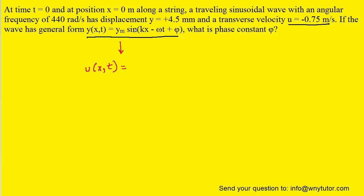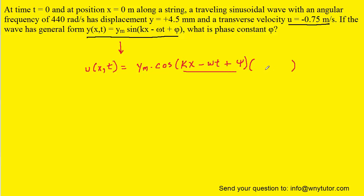The derivative of the sine function is the cosine function. But according to the chain rule, we must also multiply by the derivative of the inside of our cosine function. We're taking the derivative with respect to time, so the derivative of kx will be zero and the derivative of phi will also be zero. But the derivative of negative omega t will turn out to be just negative omega, which we can move to the front of the equation.